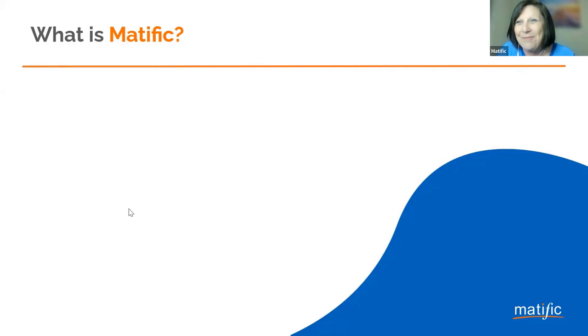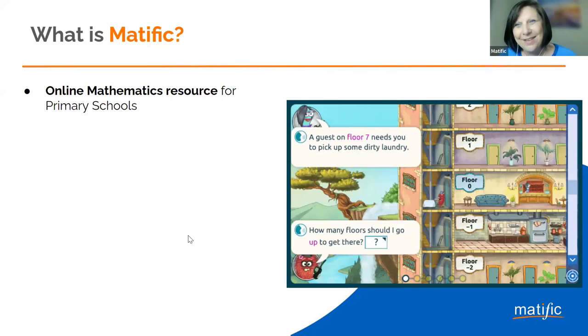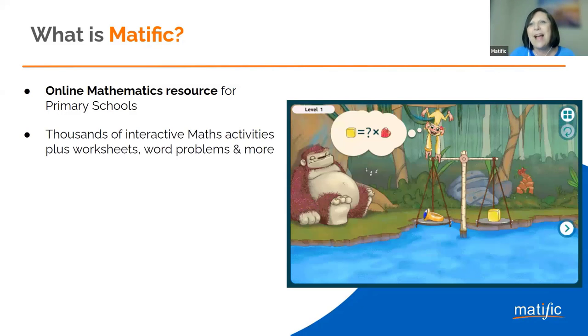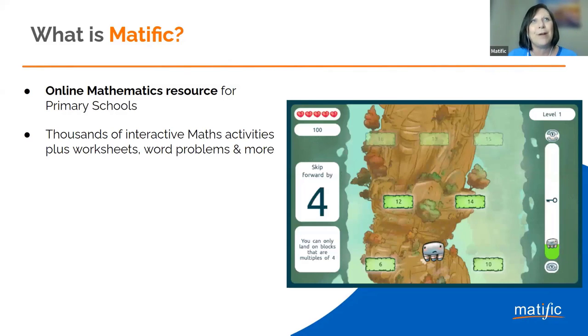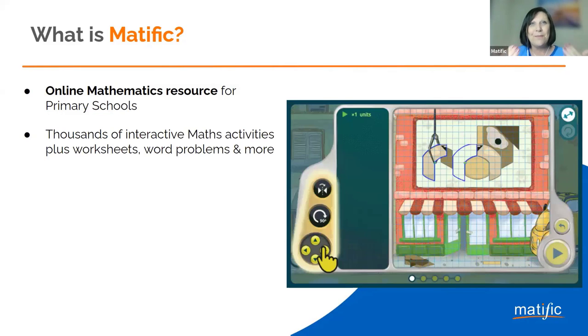There's so much more to discuss but I don't want to eat into Q&A time. Everyone please start putting your questions into the Q&A box — it might be for a specific panelist or a general question. While you do that, a quick overview of Matific: it's an online mathematical resource specifically designed for primary schools, with thousands of bright, colorful interactive activities. Given what we discussed about attention span, each activity has just five questions — a nice bite-size for students to focus on a rich task and finish it.